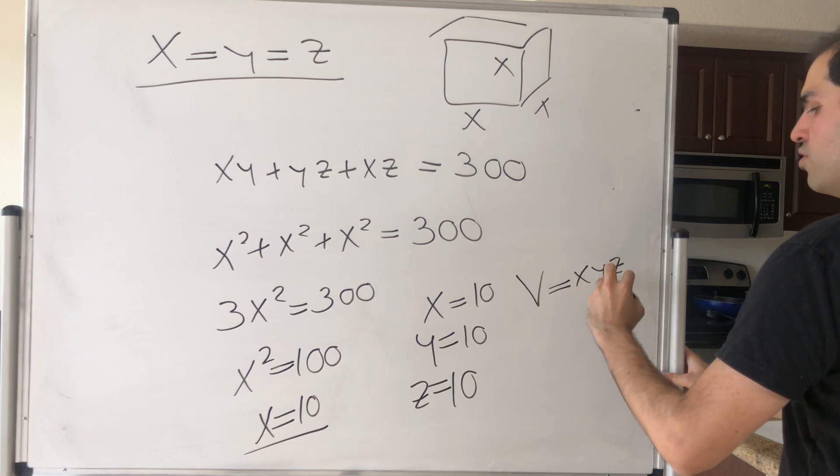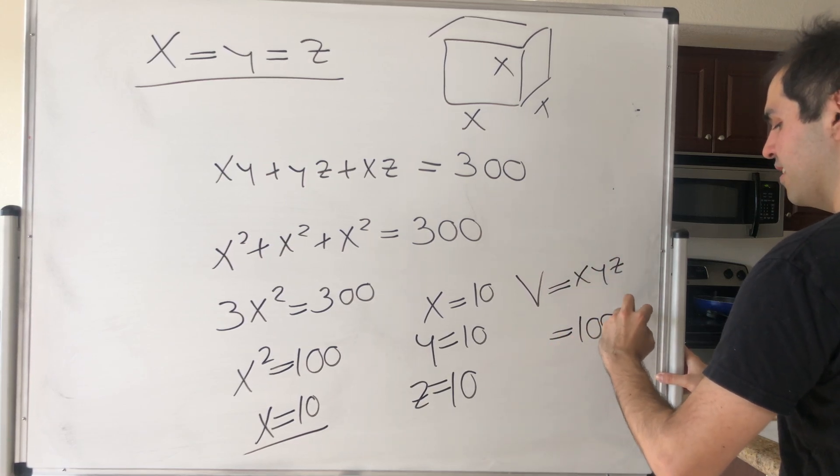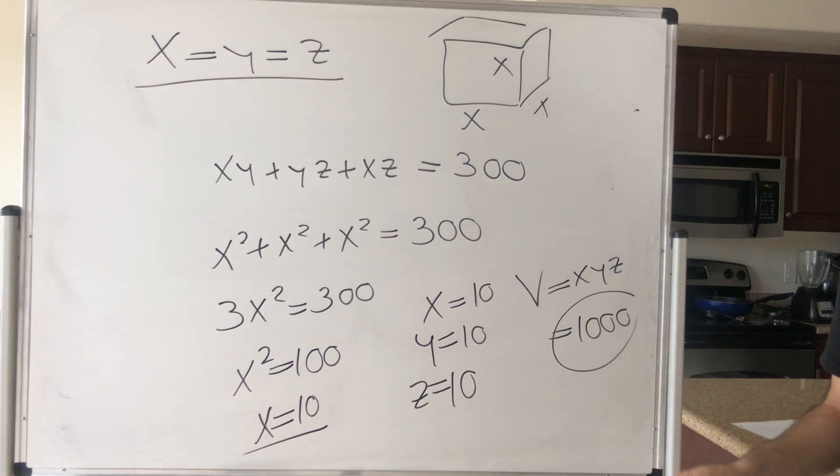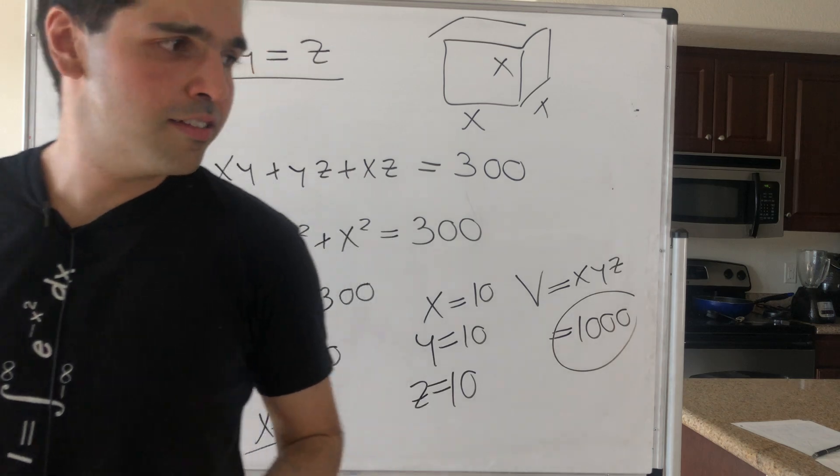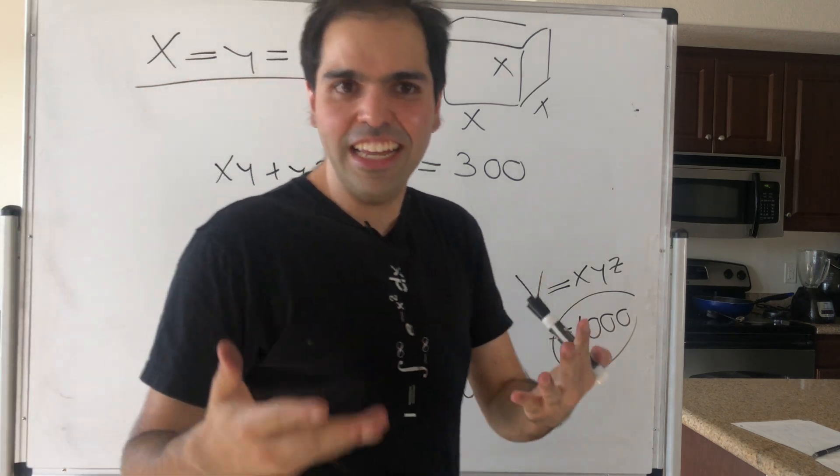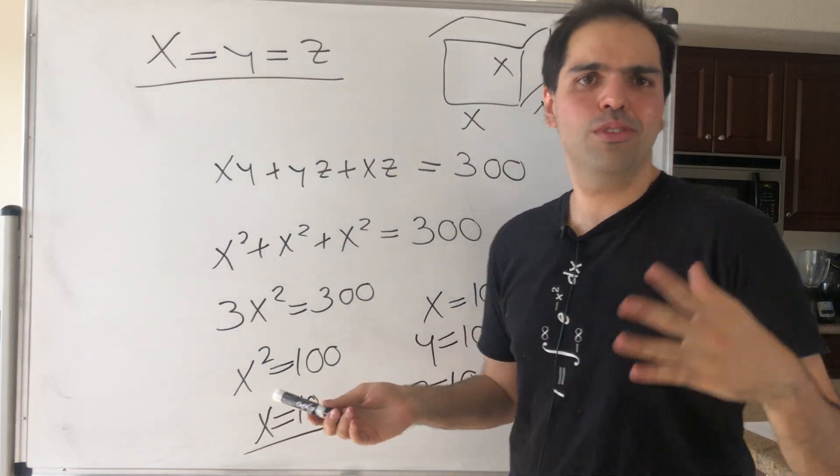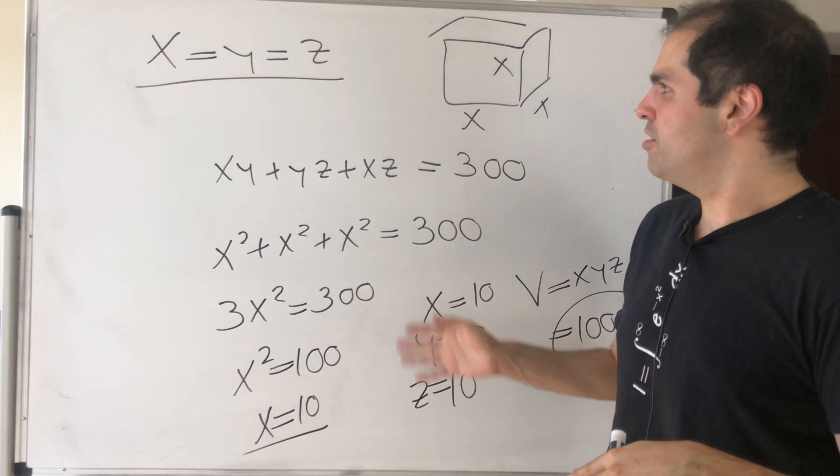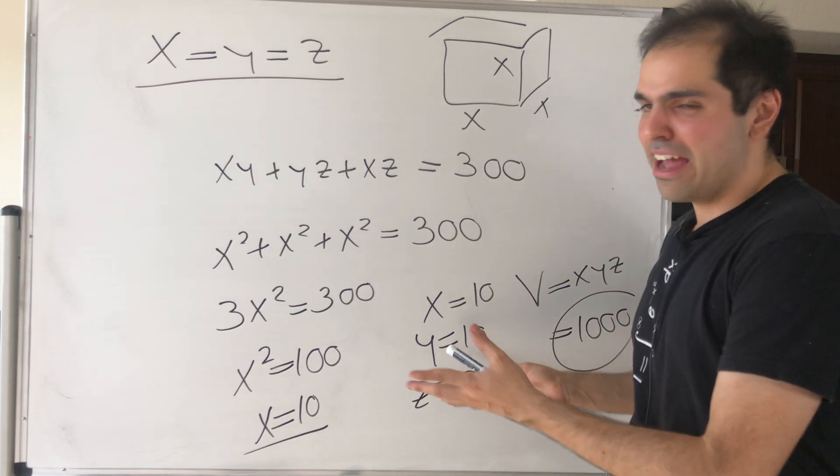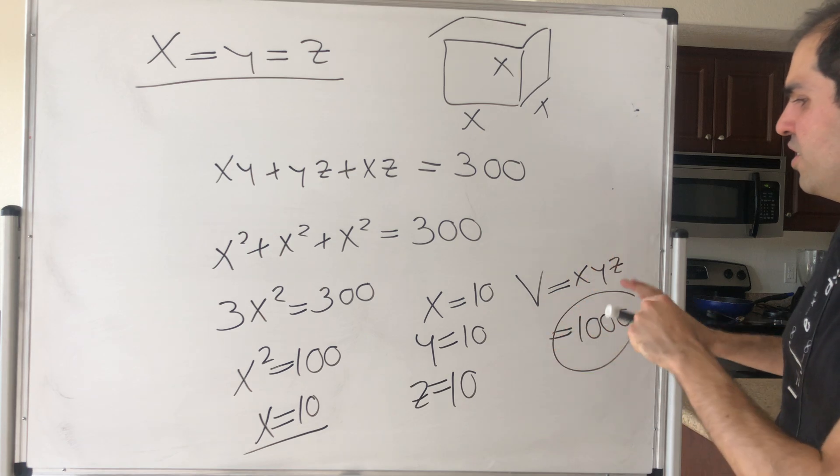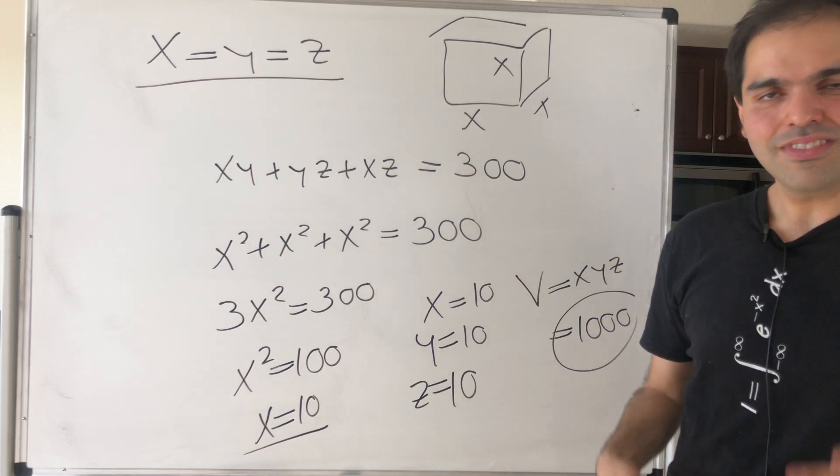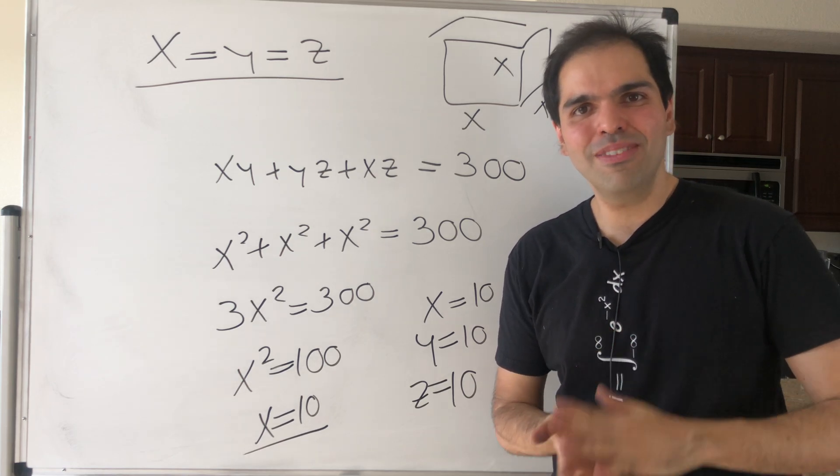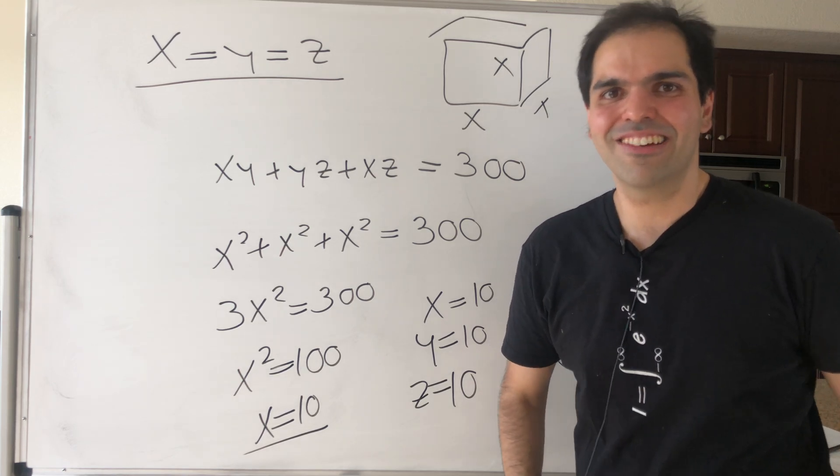There you go. So you see, Lagrange multipliers—what I want to say is it's more creative than the regular optimization, but it's very elegant in my opinion. So here we can find that x equals y equals z. I hope you like this. If you want to see more math, please make sure to subscribe to my channel. Thank you very much.